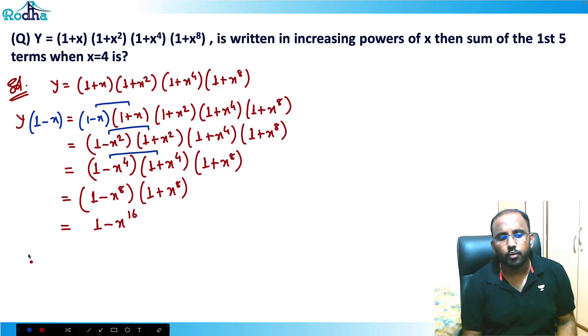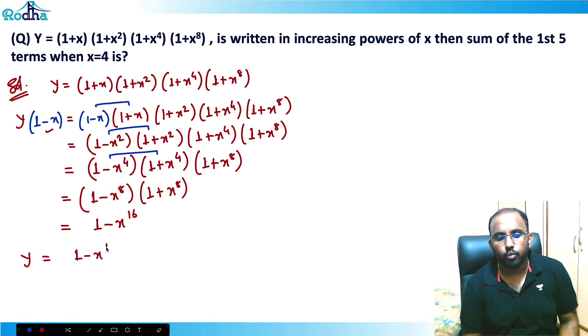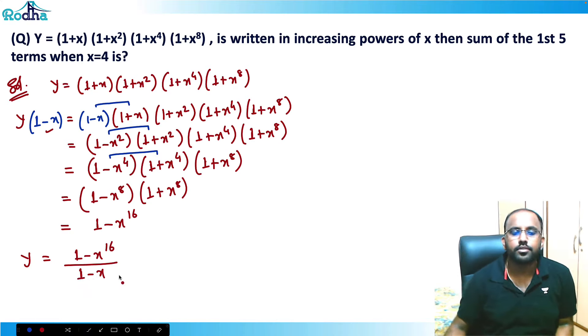Bringing (1 - x) to the other side, we get y = (1 - x¹⁶) / (1 - x). Now if you remember the GP sum formula, this connects directly to it.